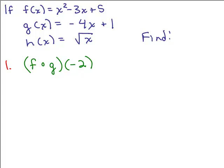Let's say we've got these three functions: f of x equals x squared minus 3x plus 5, g of x equals negative 4x plus 1, and h of x equals square root of x. Let's start out with finding f of g of negative 2.